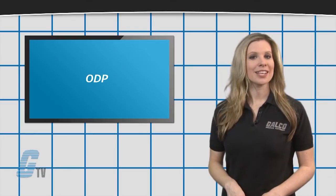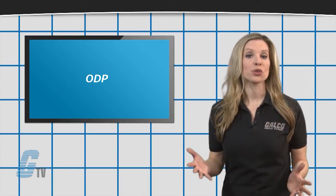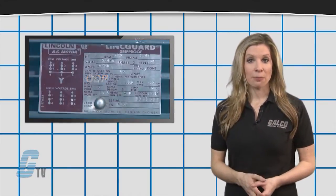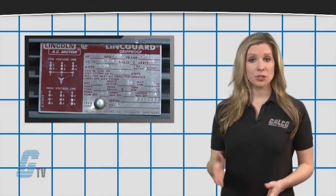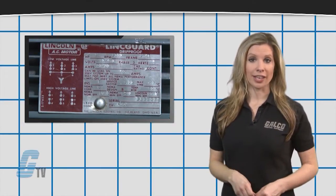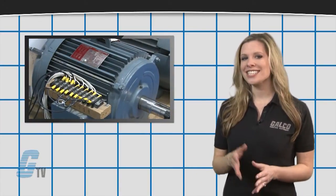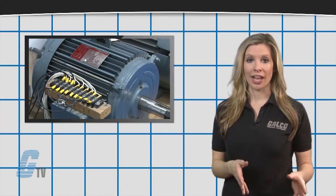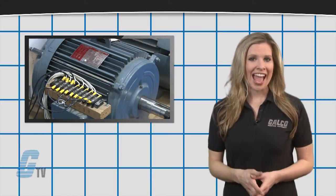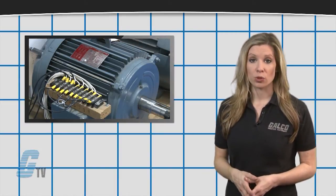The ODP enclosure is open and allows for air to cool the motor. They can protect from falling water up to an angle of 15 degrees. Although this offers a great deal of protection, it does not protect from wind-driven rain or air contaminants and is not recommended for outdoor use.